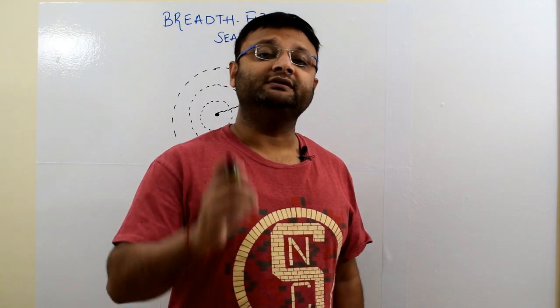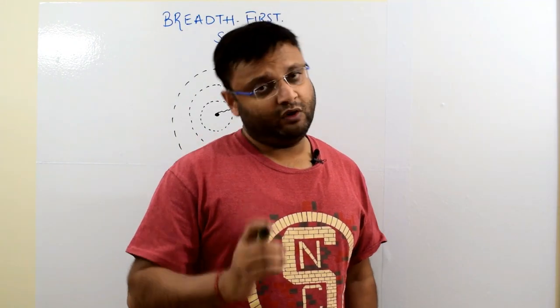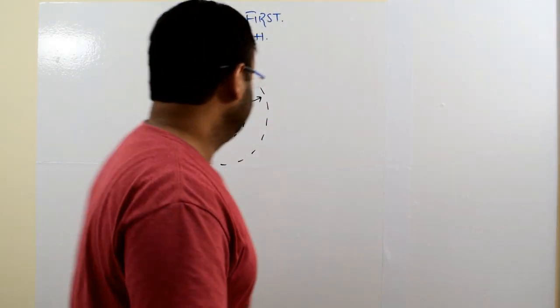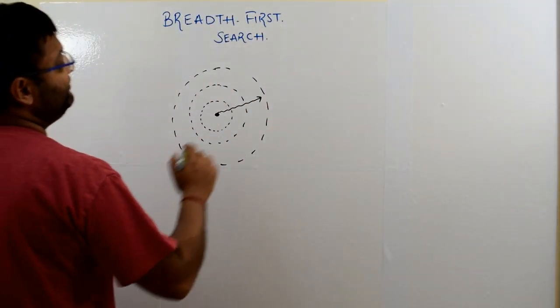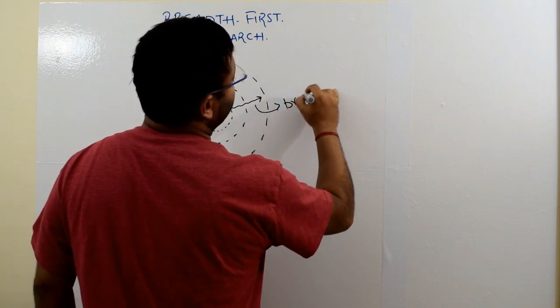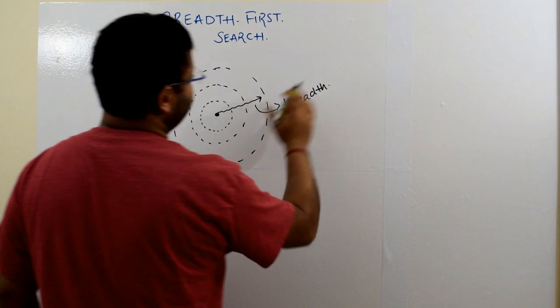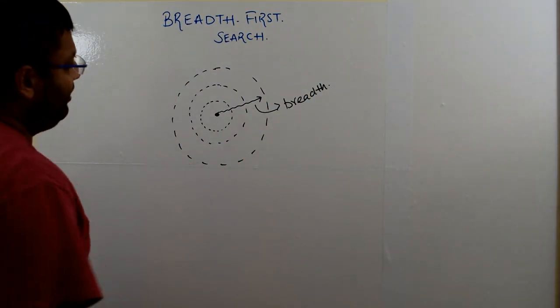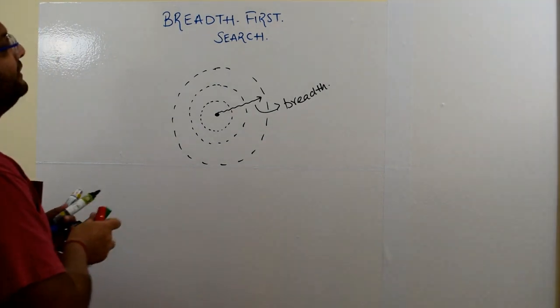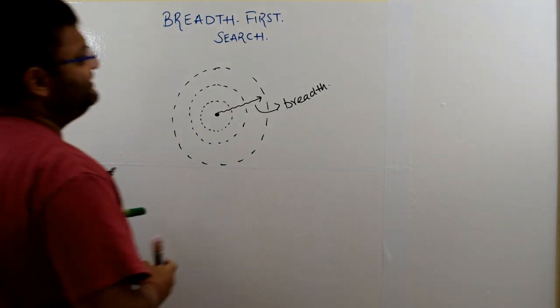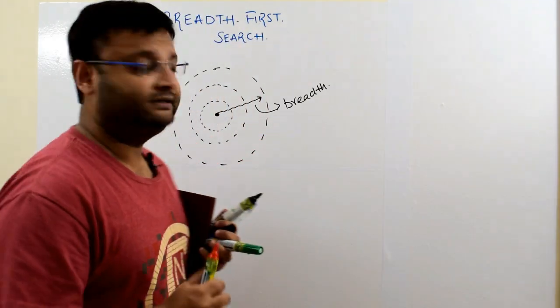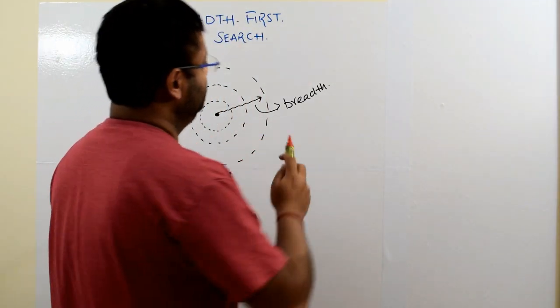This is actually the breadth first search is also based upon a similar criteria. This is spreading out along the breadth uniformly. Now, how we can relate it to our graph theory? Let me take a very small example. But yes, it is important to understand the breadth first search.